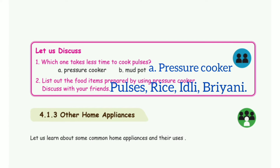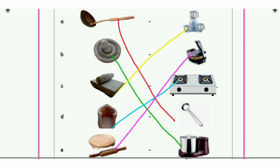2nd question: list the food items prepared by using a pressure cooker. Discuss with your friends. The answers are pulses, rice, idly, and biryani.